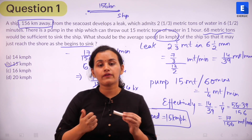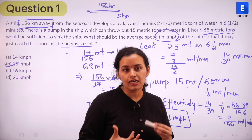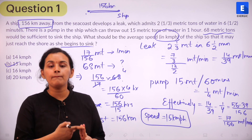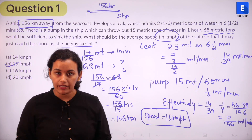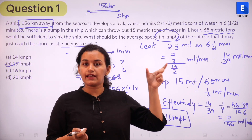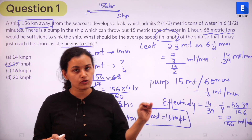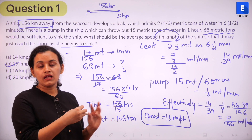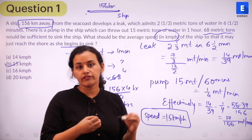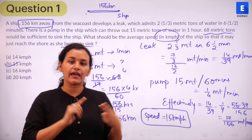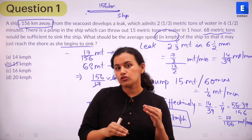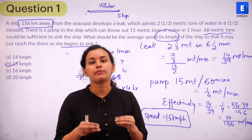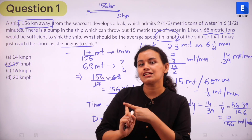This is a good question that combines both time, speed, and distance as well as time and work. First, we find how much water effectively enters per minute considering both the leak and the pump. Then, knowing that 68 metric tons causes the ship to sink, we find the time for that to occur. With the distance of 156 kilometers and that time, we calculate the required speed. Even though it looked complicated, it works around very basic principles.